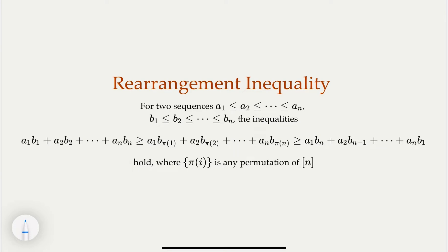Last time we introduced the rearrangement inequality. The idea is that if you have two sorted sequences a_n and b_n, the product sum will achieve the maximum if they are in order and the minimum if they are in reverse order with each other, or in between would be the other permutation of the orders.